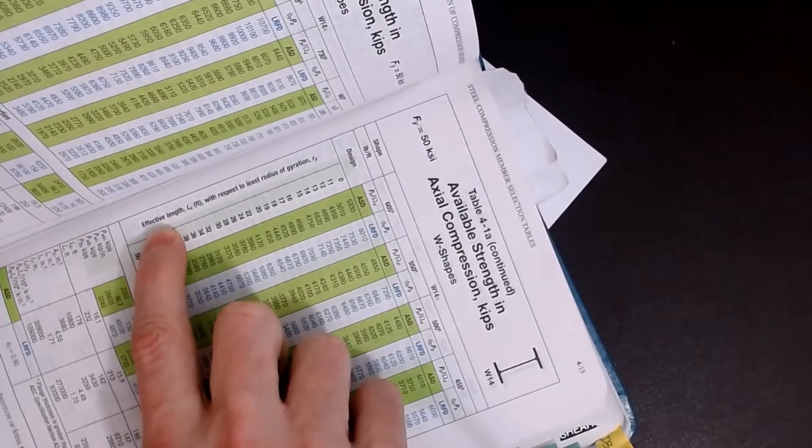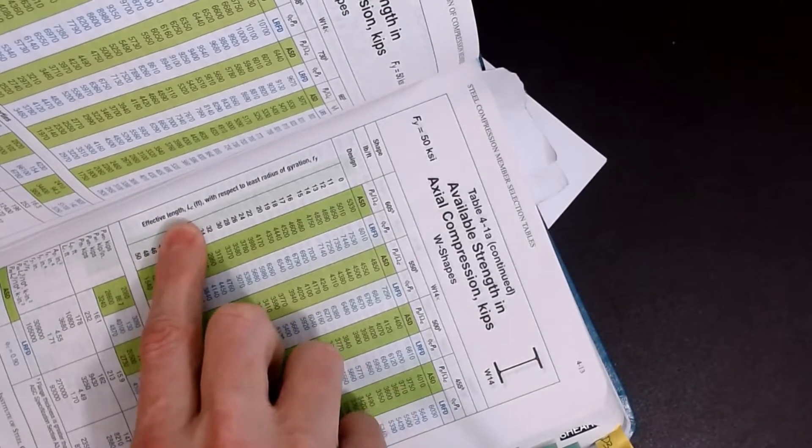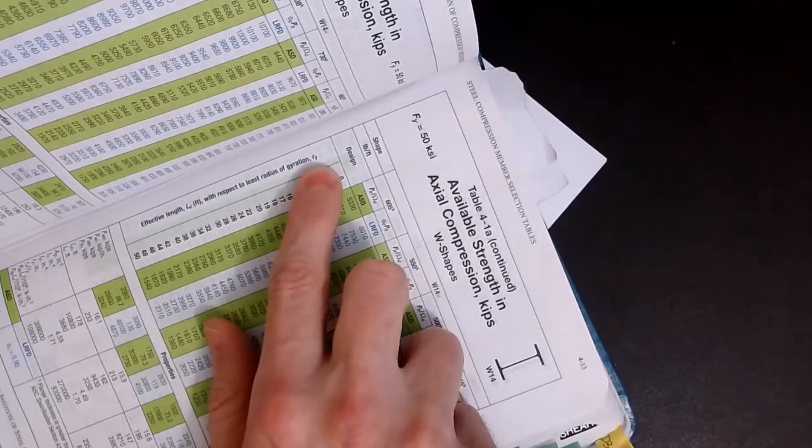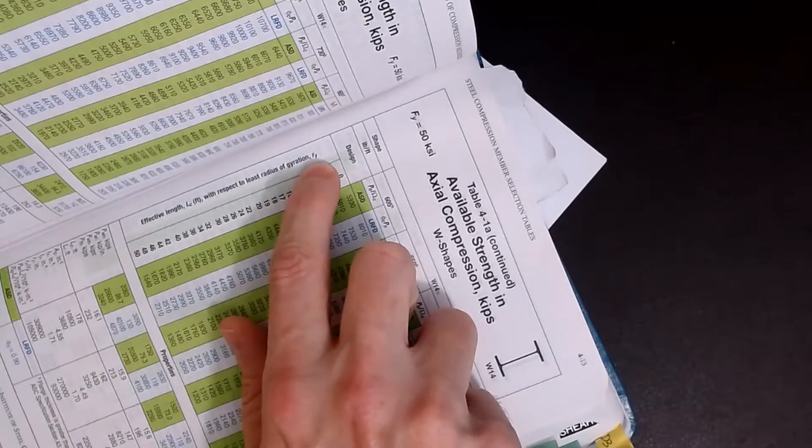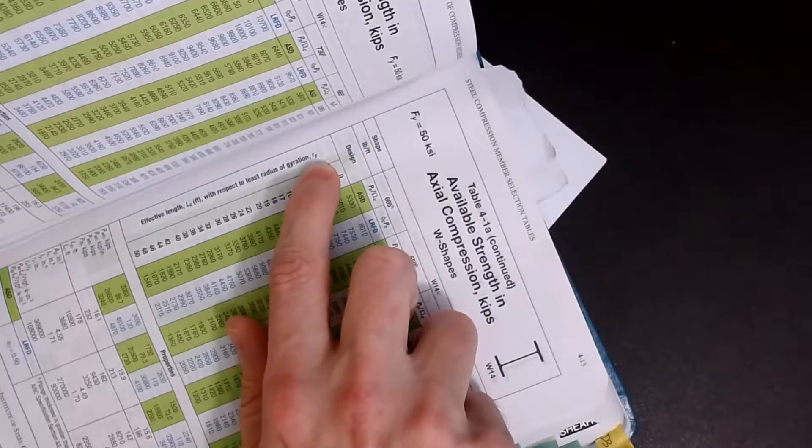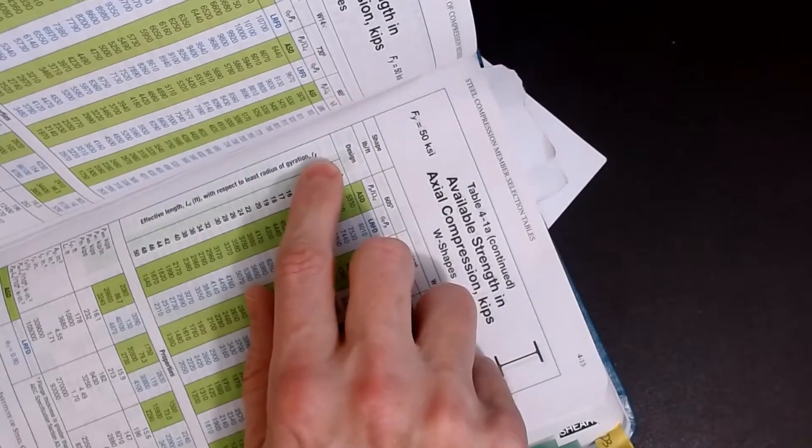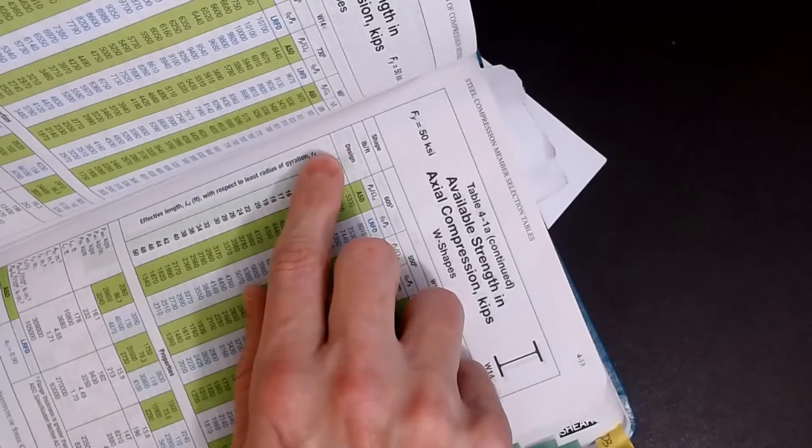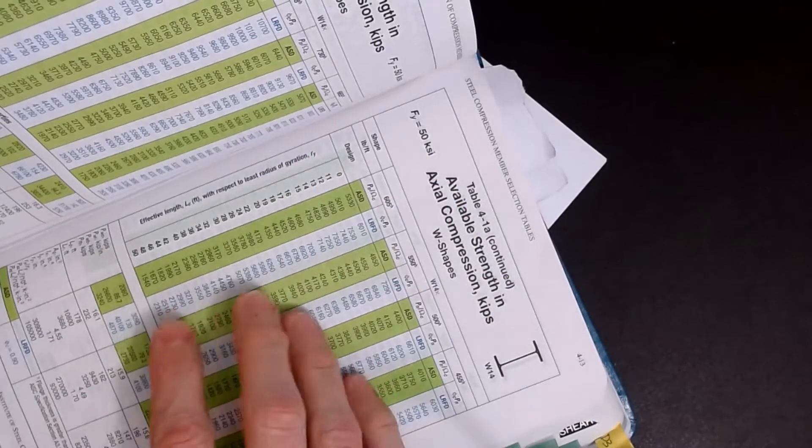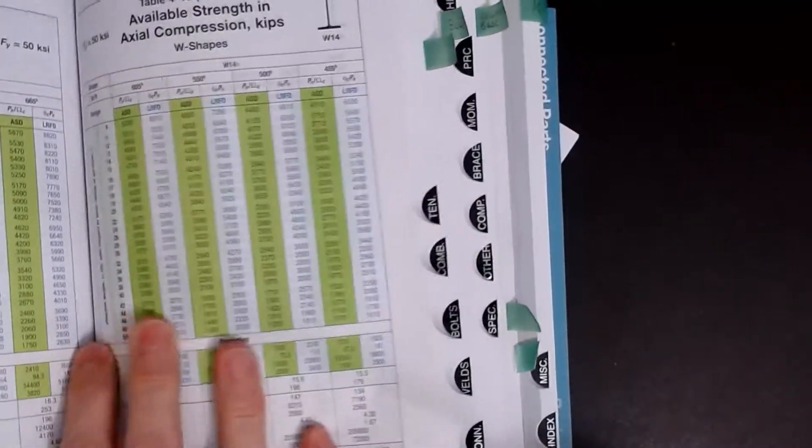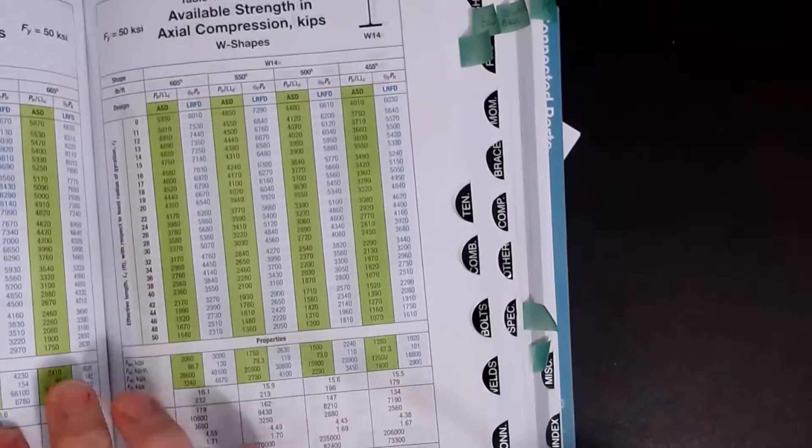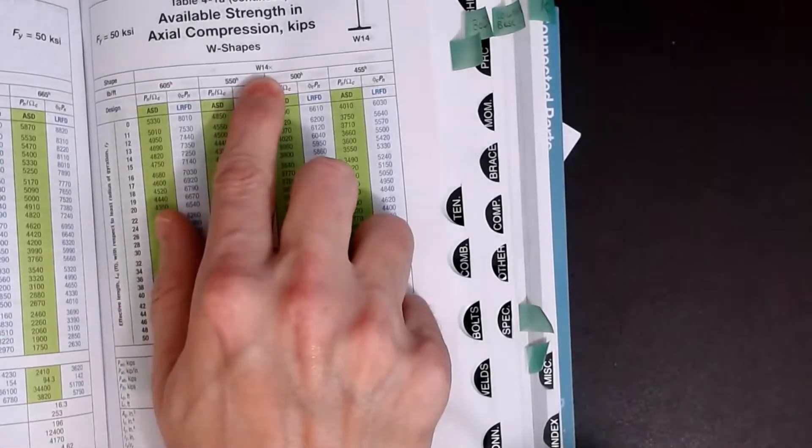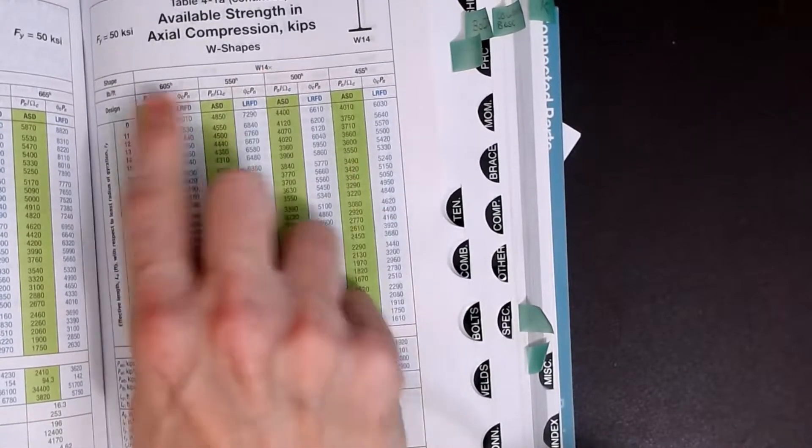And what we have then is if we look at the table, on this axis here we have our KL value, which would be our KL measured in feet. Now I want you to pay special attention to the note that is right here. These tables are set up such that the effective length with respect to the least radius of gyration is Y.